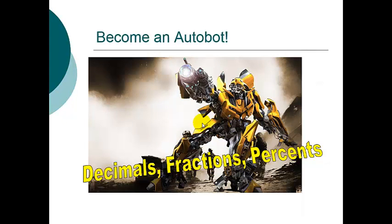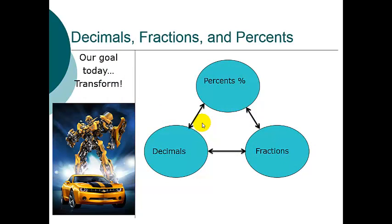Our goal is to become an Autobot — I said Autobot because they're the heroes and we want to be positive. Bumblebee is my favorite. We want to be masters at changing: if I gave you a decimal and said what is this as a percent, you'd be able to change it. In our daily warm-up we reviewed how to change a decimal to a fraction and a fraction to a decimal. We have three types of numbers — decimals, percents, and fractions — and we need to be able to switch between these different forms.